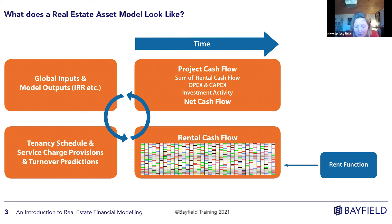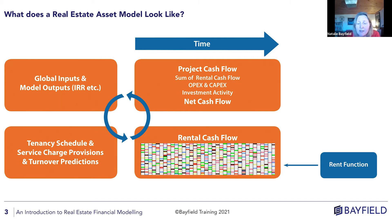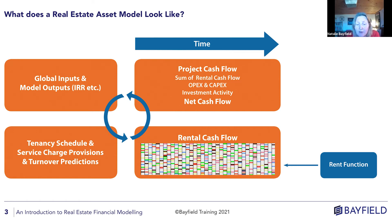Looking at the colorful rental cash flow section here - the colors represent different lease events: a break clause, a lease expiry, a rent-free period. If they're all spread around a bit, there is diversification - not everything is happening at the same time. From a modeling perspective, in the top left-hand corner of that rental cash flow, you're going to have to model for all of that behavior for each of your tenants across the whole cash flow.